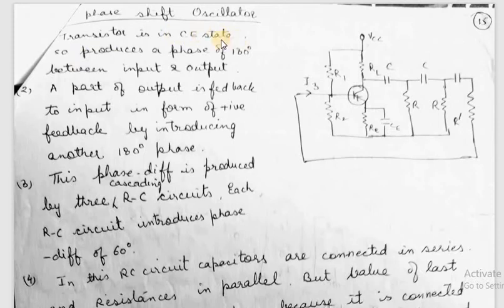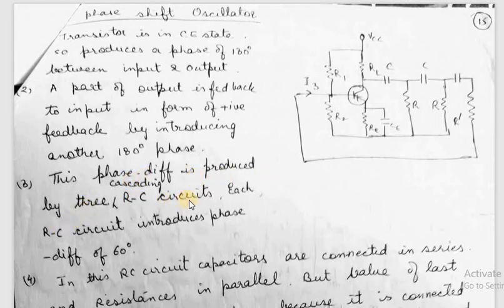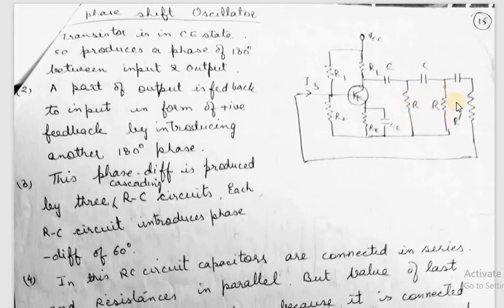The transistor is in common emitter configuration, so it produces a phase of 180 degrees between input and output. A part of the output is fed back to the input in the form of positive feedback by introducing another 180 degrees phase. This phase difference is produced by three cascading RC circuits. The value of each RC circuit is taken in such a way that it introduces a phase difference of 60 degrees, so three stages are used so that the total provides 180 degrees phase to fulfill the criteria.